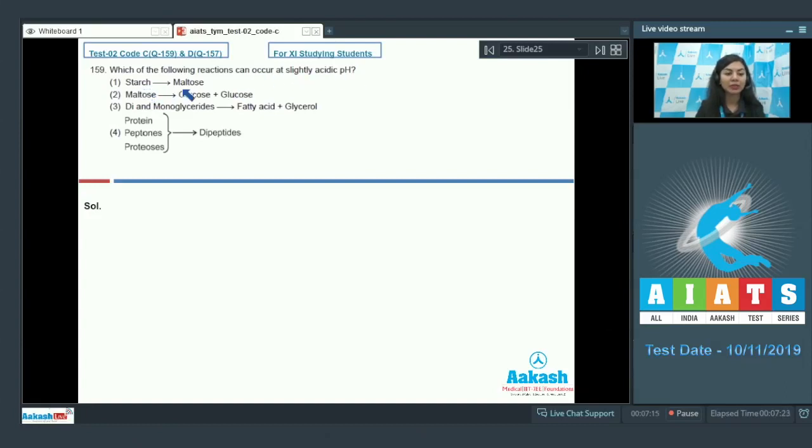Question 159: Which of the following reactions can occur at slightly acidic pH? Starch conversion into maltose, maltose splitting into glucose, di- and monoglycerides conversion into fatty acid and glycerol, or digestion of proteins into dipeptides? The process of digestion begins in the oral cavity itself with the breaking down of starch.